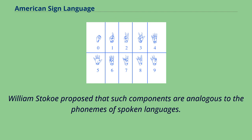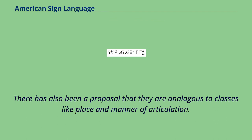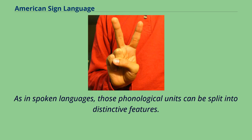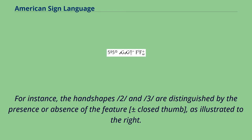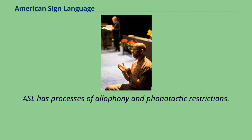As in spoken languages, those phonological units can be split into distinctive features. For instance, the handshape /2/ and /3/ are distinguished by the presence or absence of the feature plus or minus close thumb. ASL has processes of allophony and phonotactic restrictions, and there is ongoing research into whether ASL has an analog of syllables in spoken language.